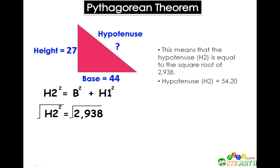So the square root of H2² equals the square root of 2,938. This means H2 equals the square root of 2,938, or the hypotenuse equals 54.20.